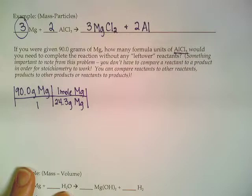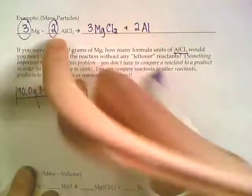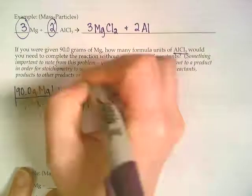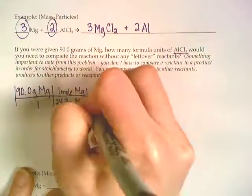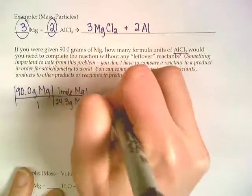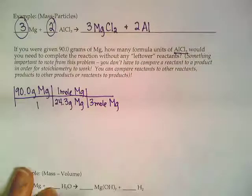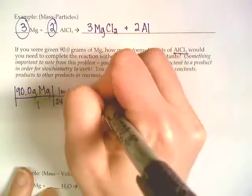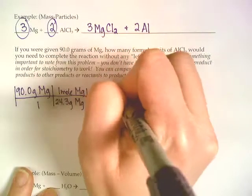So we want the aluminum chloride ratio here. It's a three to two. I'm going to put the three on the bottom because that's the number that goes with the magnesium, and that's the unit I'm trying to get rid of. And I'm going to put the two part of that aluminum chloride up at the top.